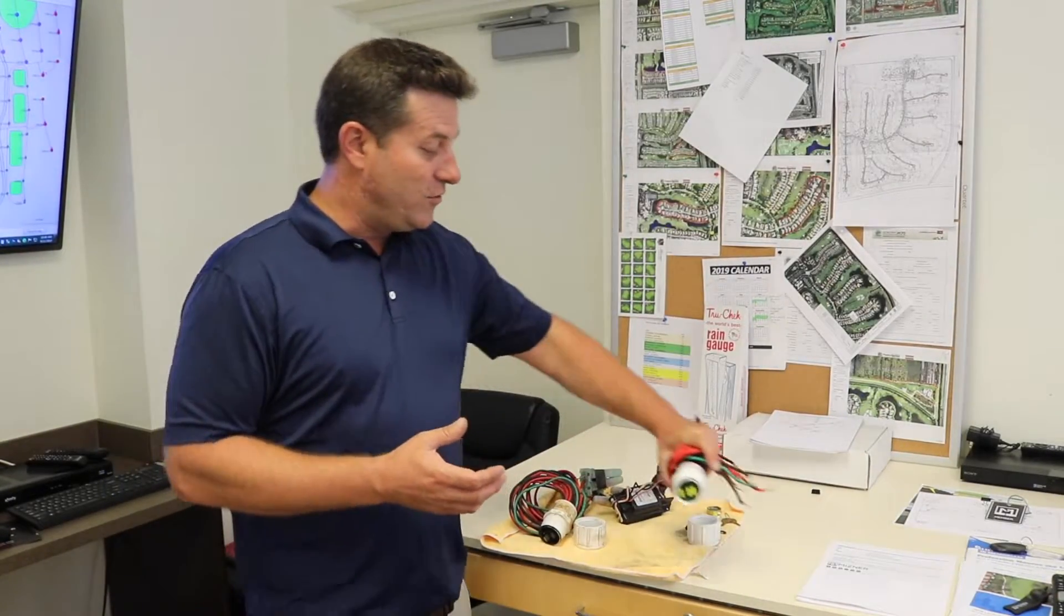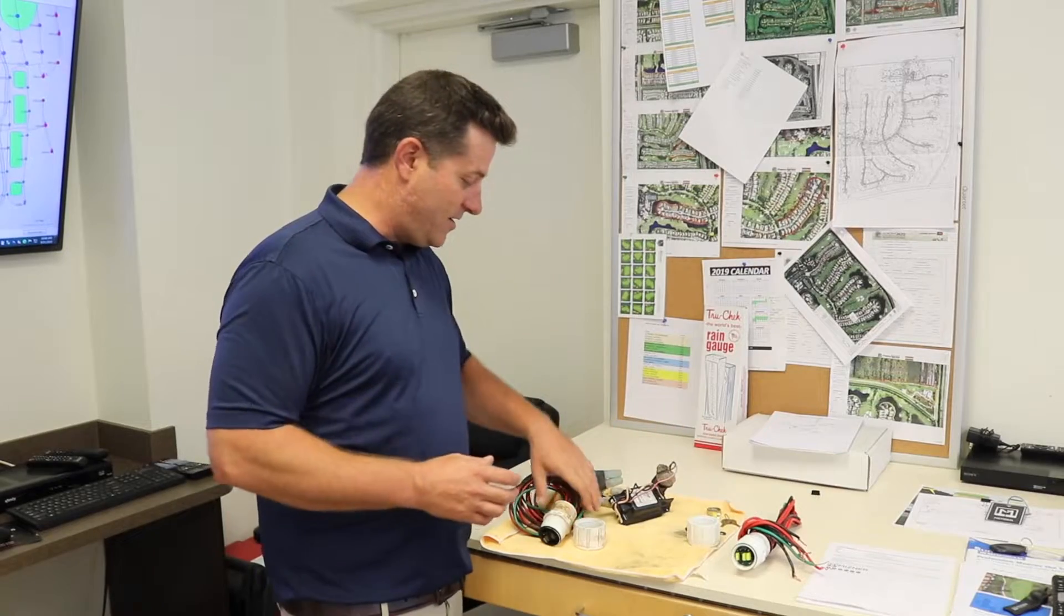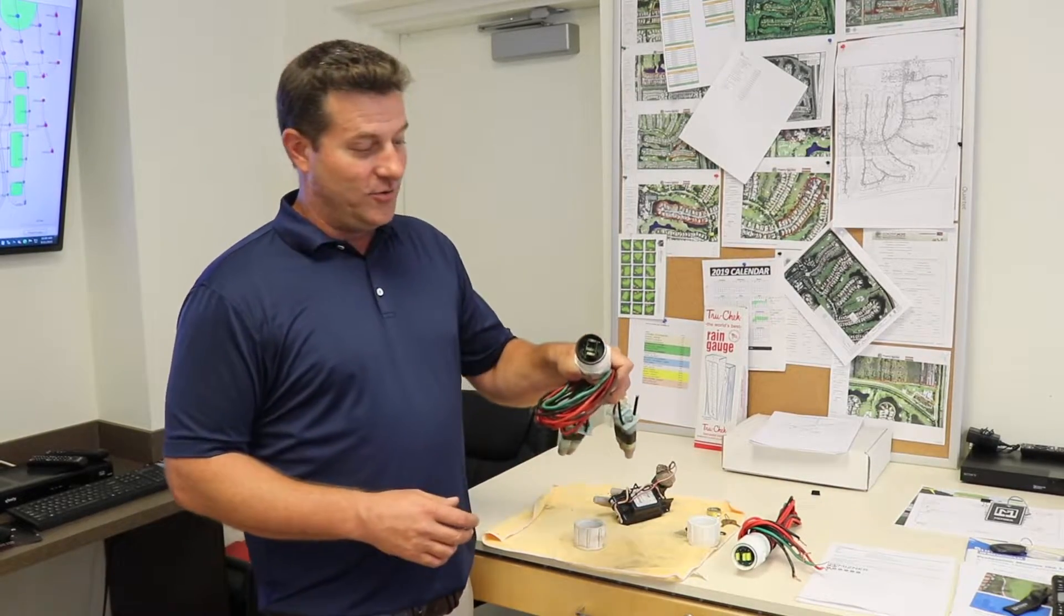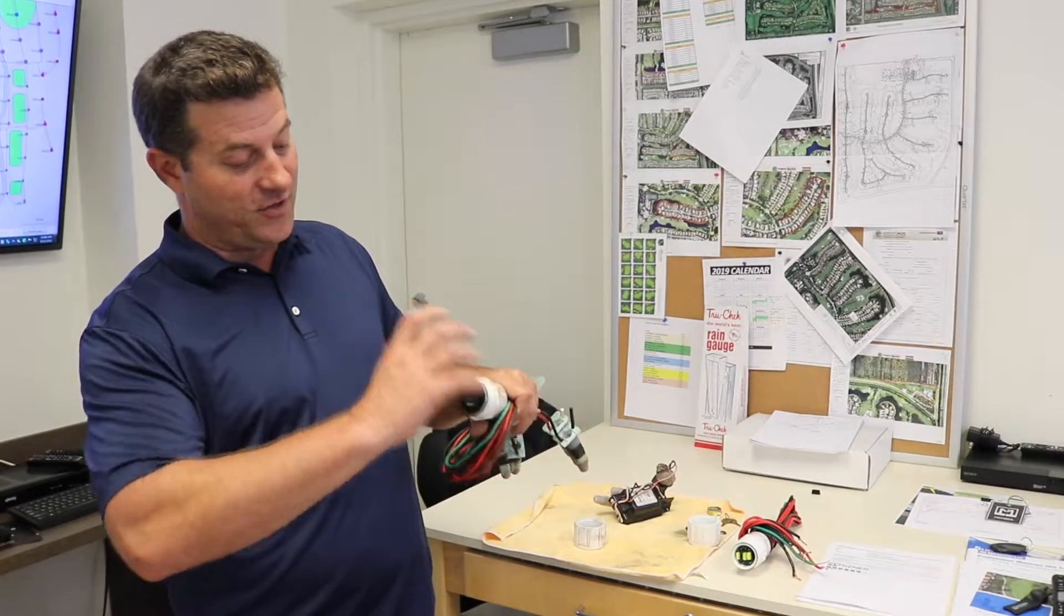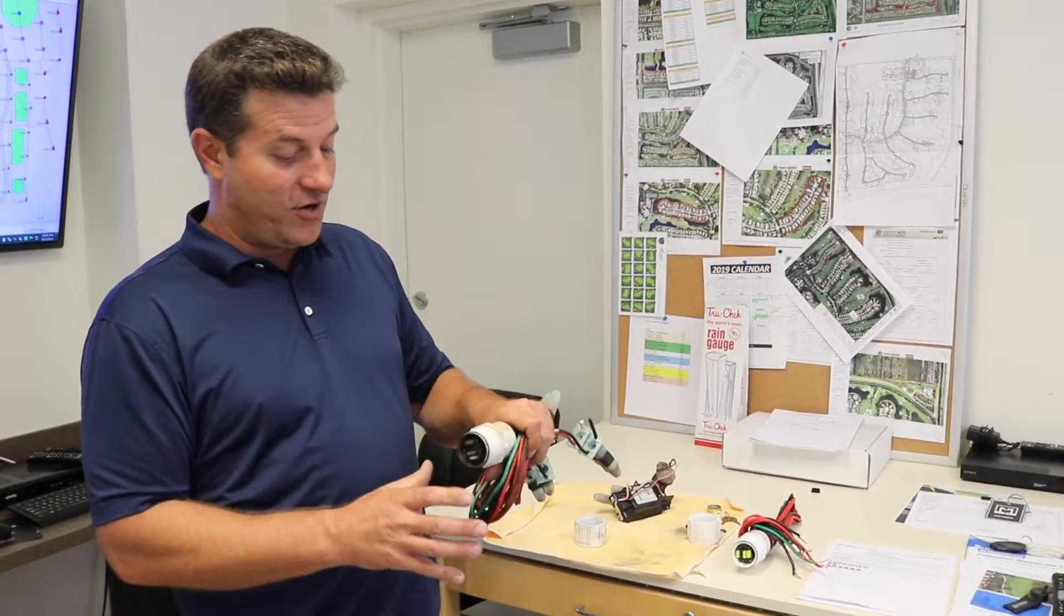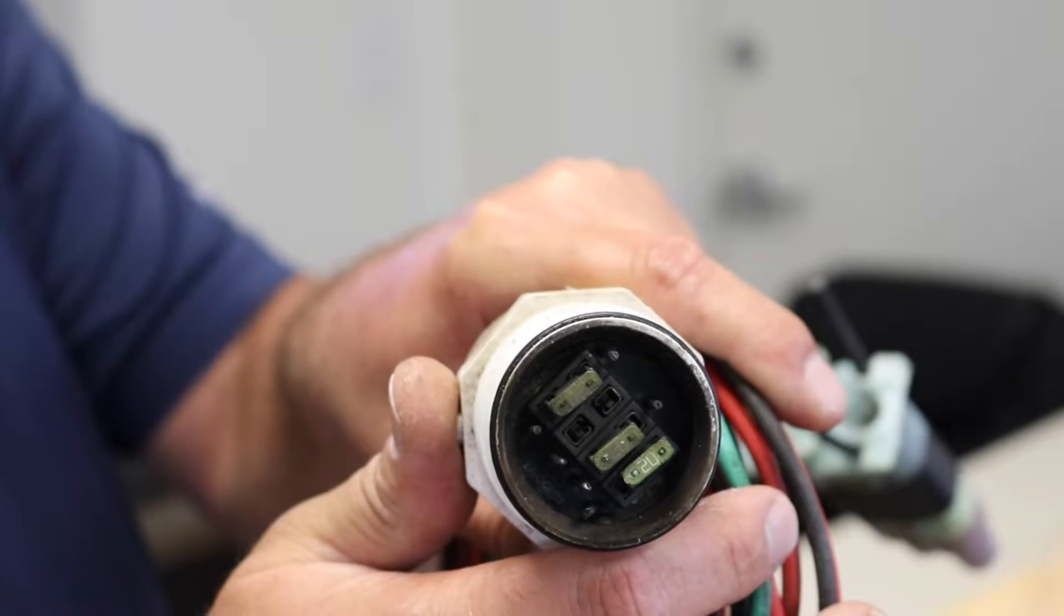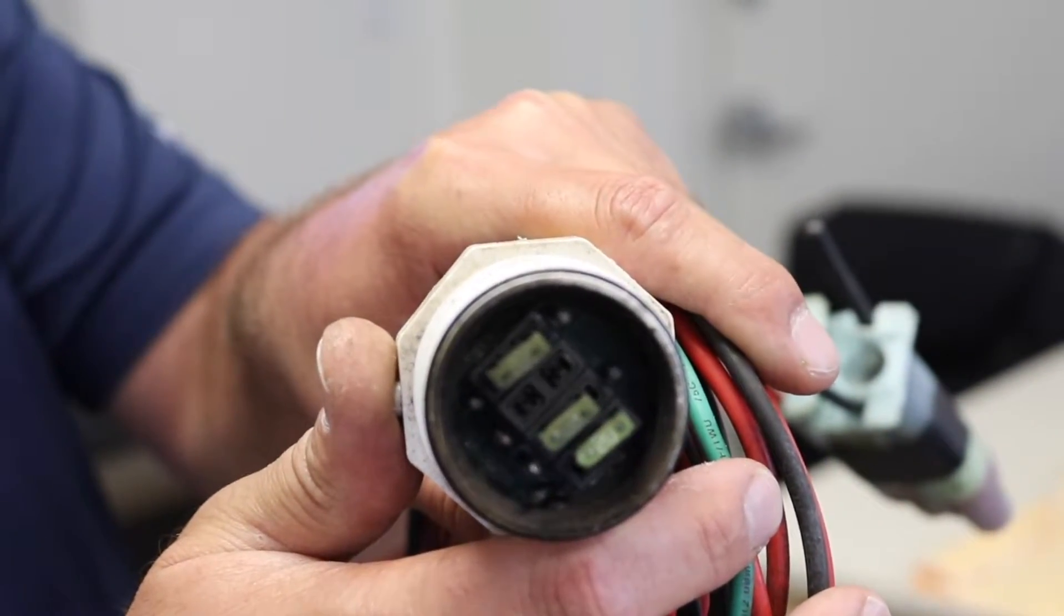However, we do occasionally get a direct hit, and when you get a direct hit you'll see this one here has been completely melted out inside. This piece is no longer good in any way, shape, or form, so the whole thing has to be cut out of the wire system and replaced.